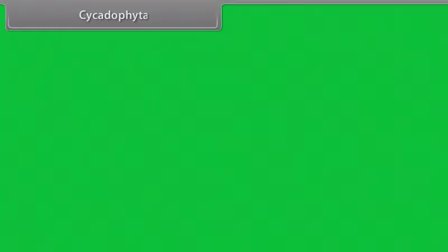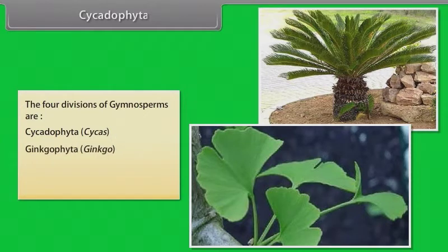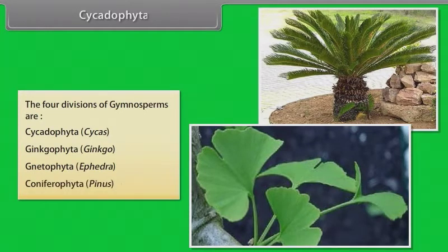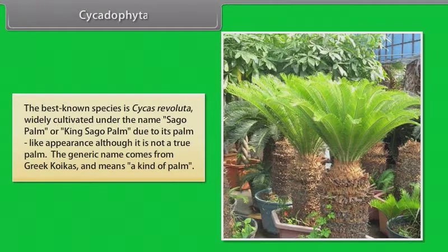The four divisions of Gymnosperms are: Cycadophyta (Cycas), Ginkgophyta (Ginkgo), Gnetophyta (Ephedra), and Coniferophyta (Pinus). The best known species is Cycas revoluta, widely cultivated under the name Sago Palm or King Sago Palm due to its palm-like appearance, although it is not a true palm. The generic name comes from the Greek 'Koix' meaning a kind of palm.